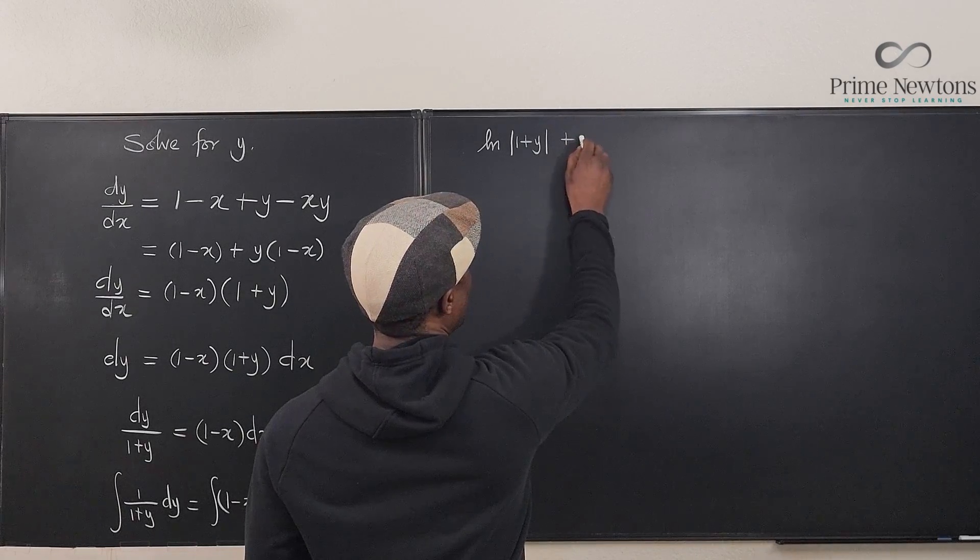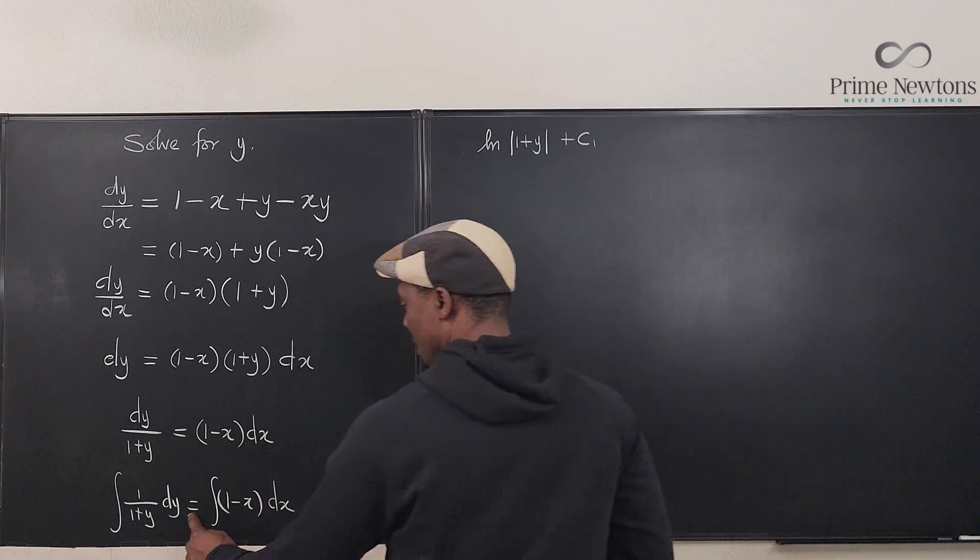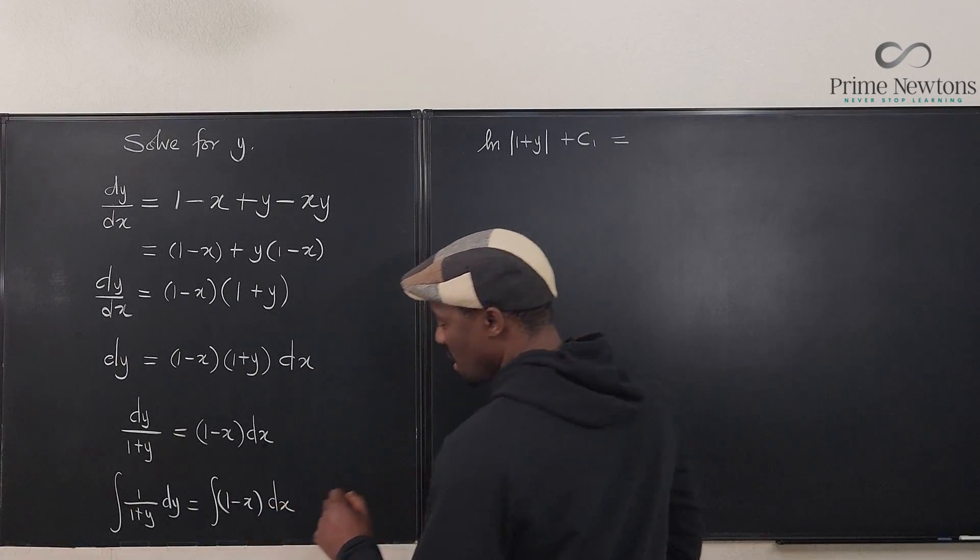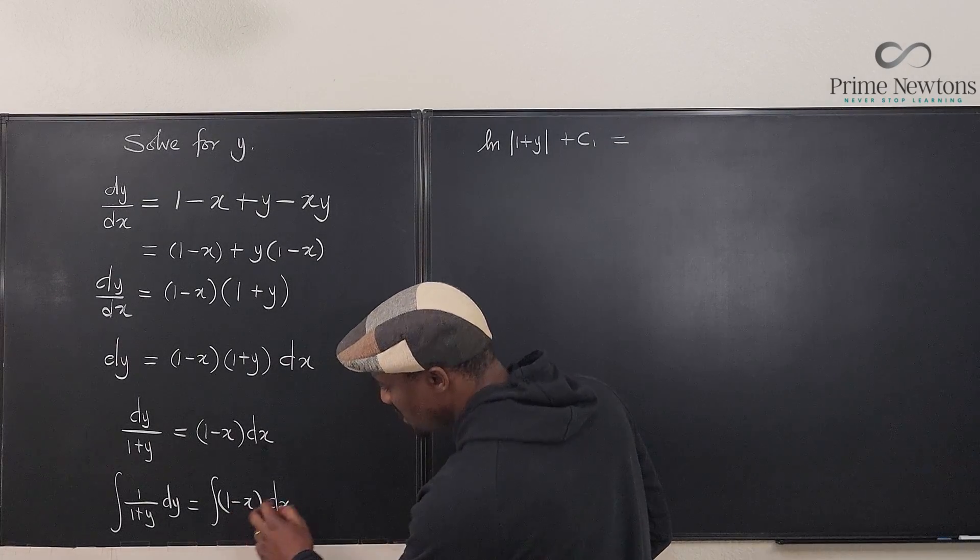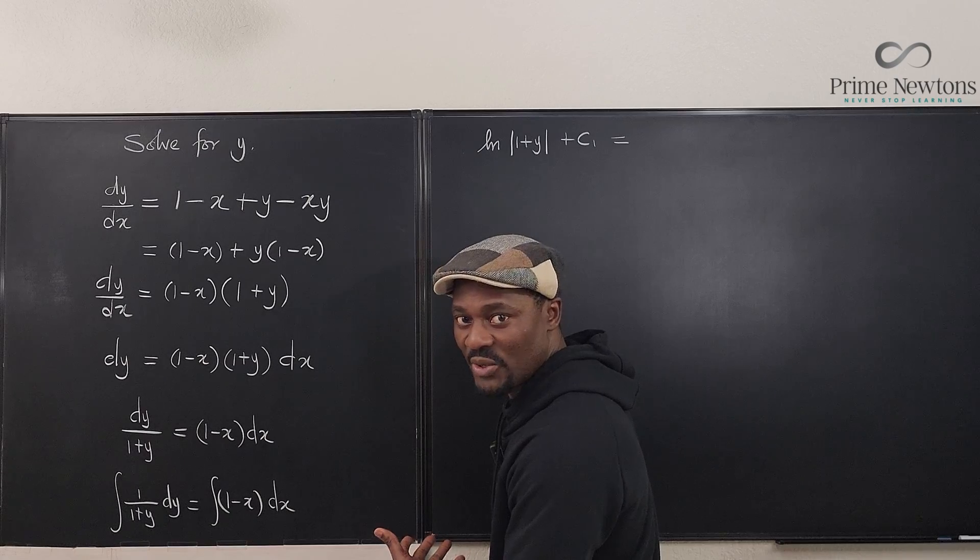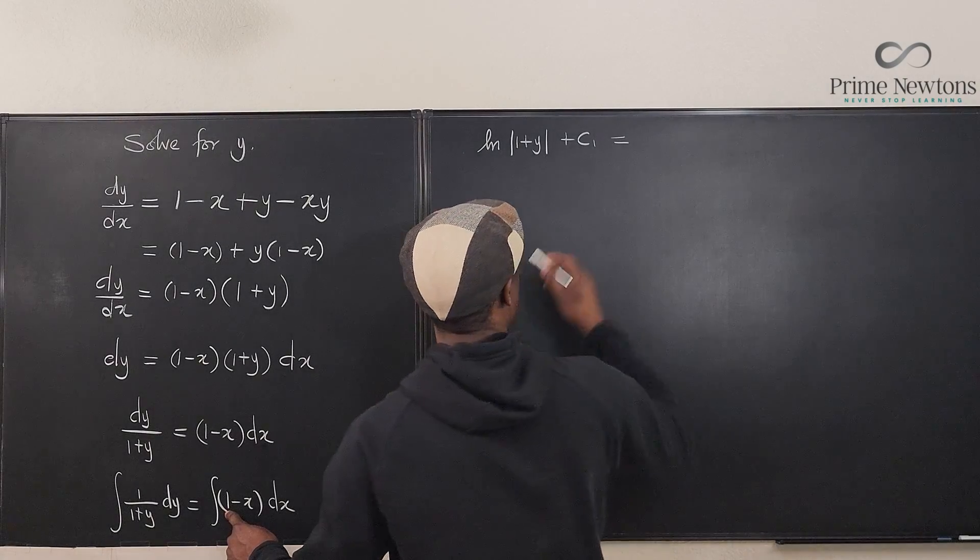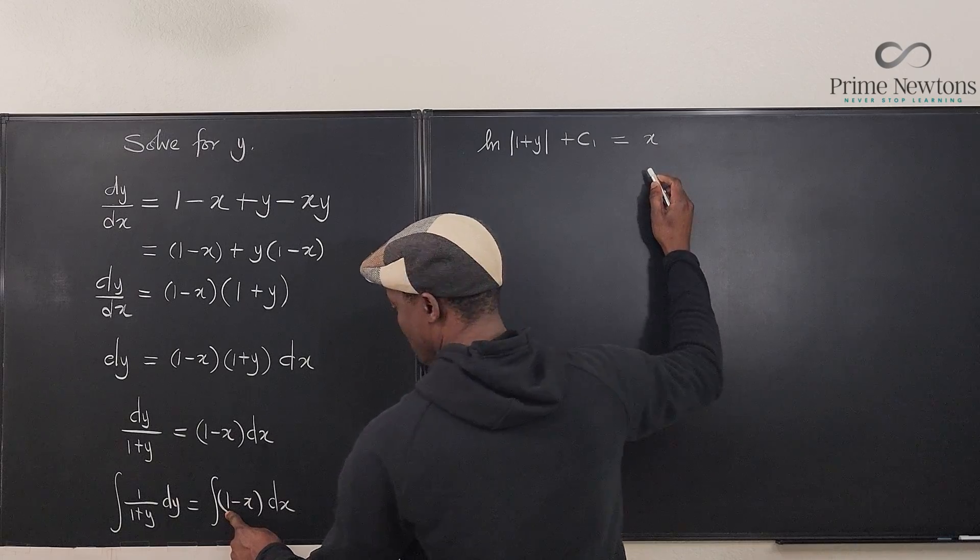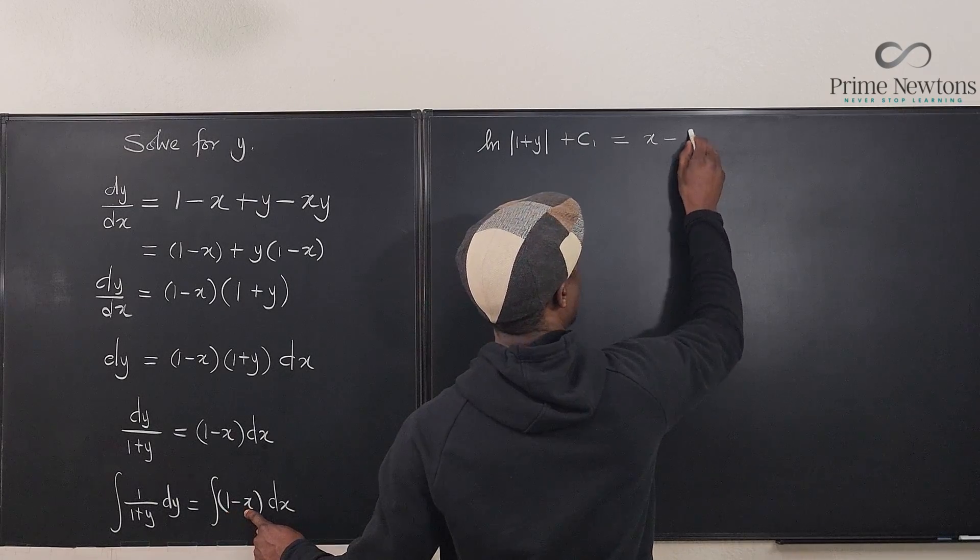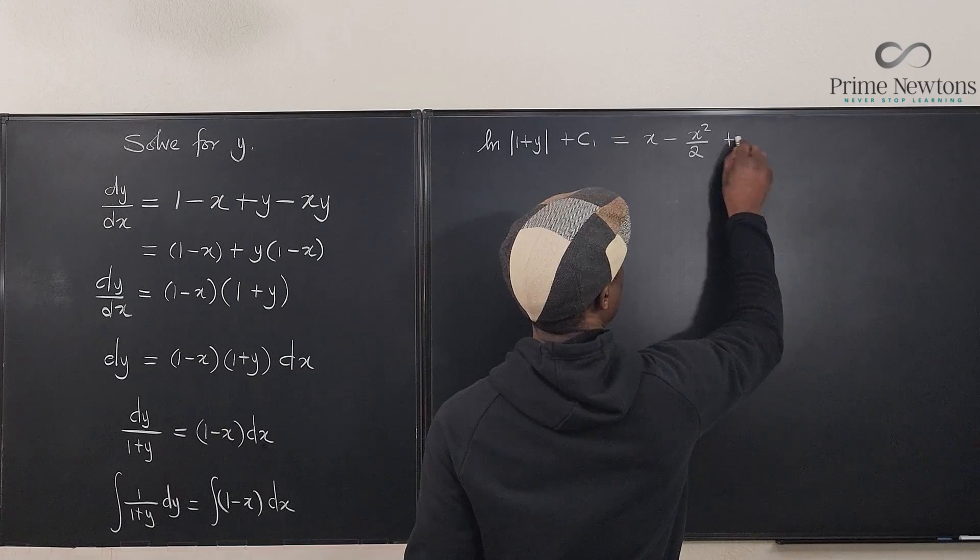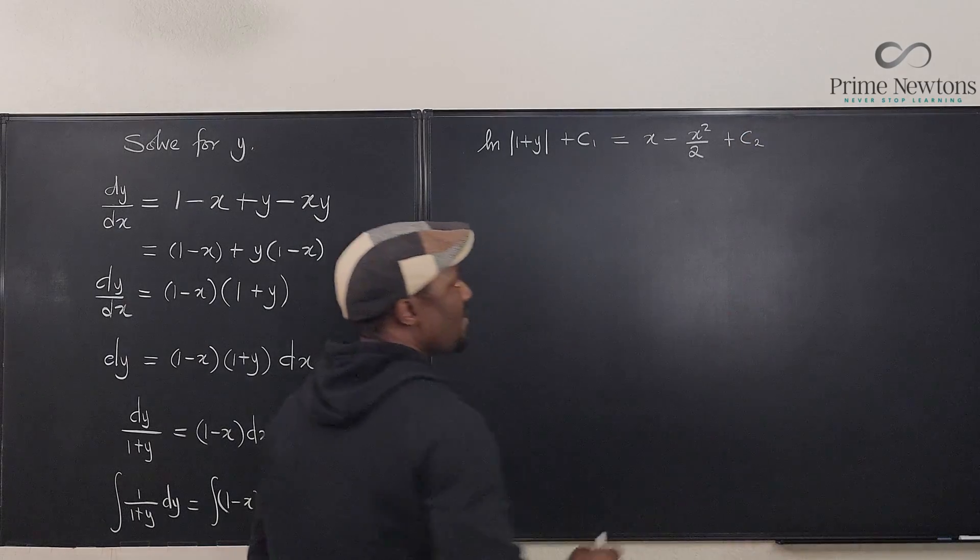Should we say plus c? For the sake of this video I'm going to say plus c1. Let's go to the right hand side. This is going to be, if we integrate 1 minus x squared, it's just plain integration - there's no special substitution. If you integrate 1 you get x, if you integrate this you get x squared over 2, and we're going to add a constant, let's call it plus c2.